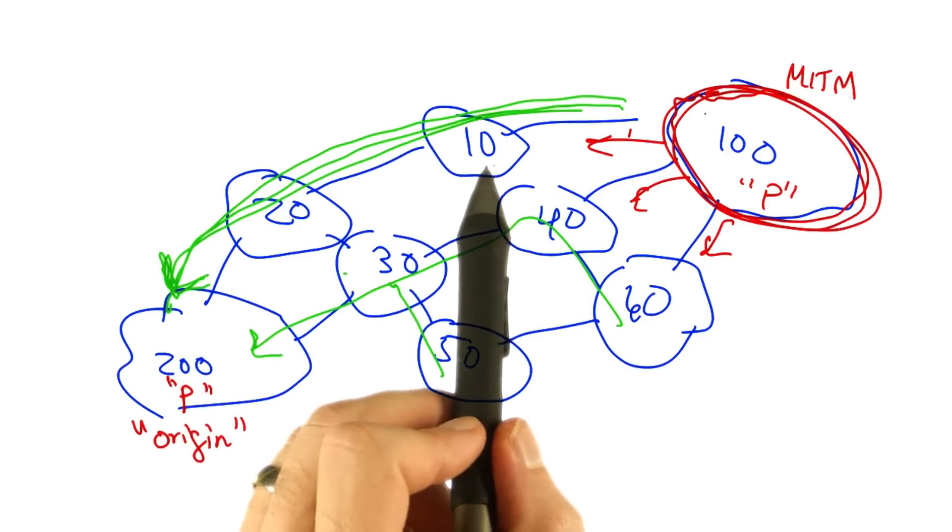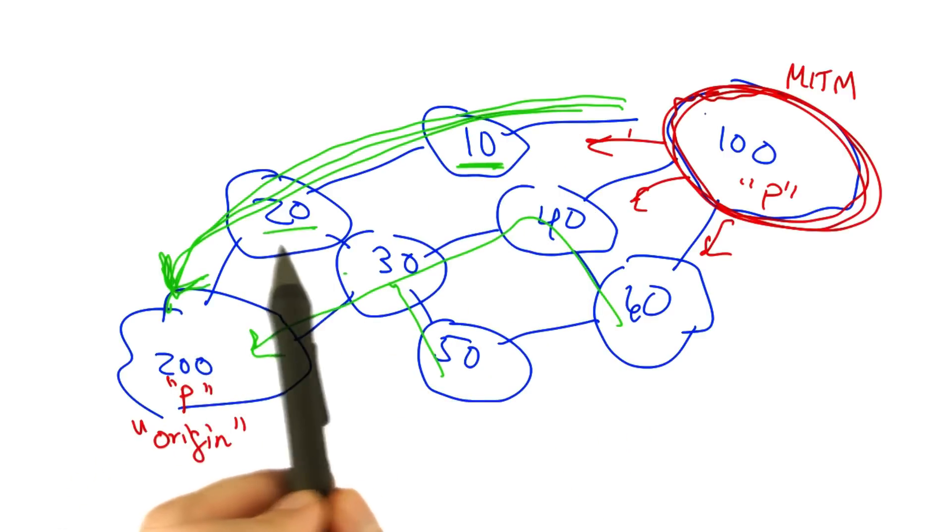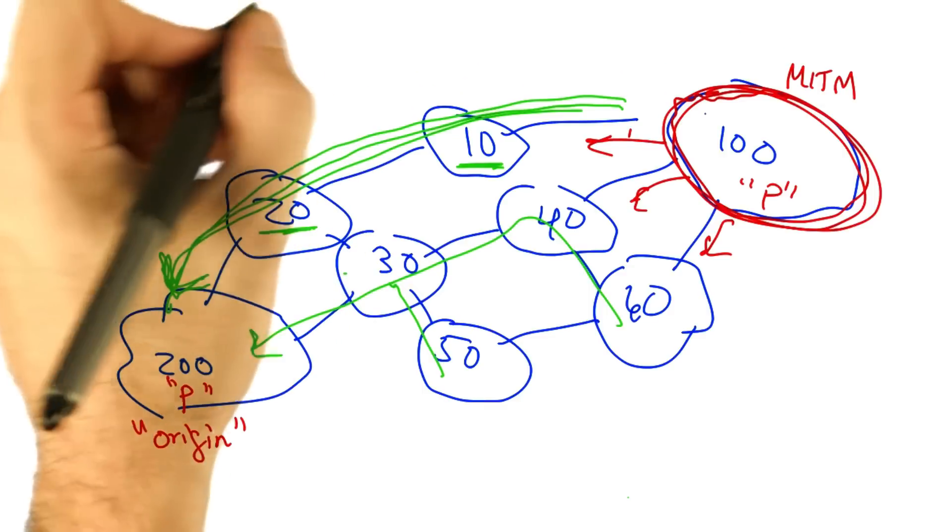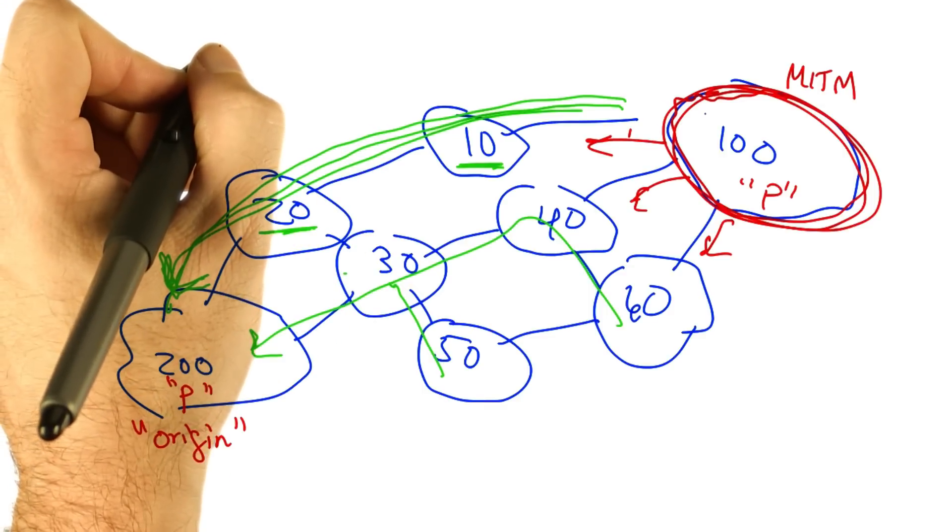So what we want to do is make sure that neither AS10 nor AS20 accept this hijacked route. The way that we can do that is through a technique called AS path poisoning.